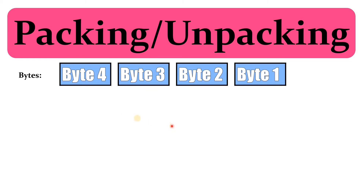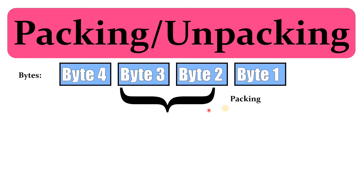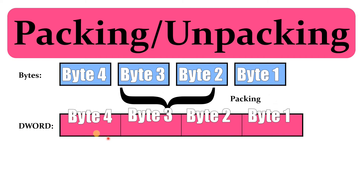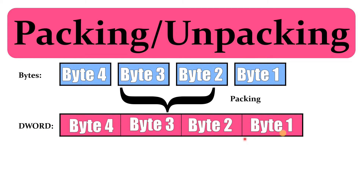Assume that we have four bytes of data — I've called them byte four, byte three, byte two, and byte one. Each one contains eight bits. In some scenarios we would need to combine all these four bytes and pack them into a single variable which will have the type of double word. The double word will have four bytes.